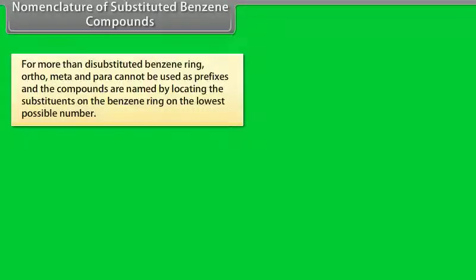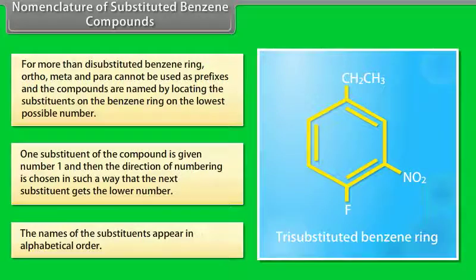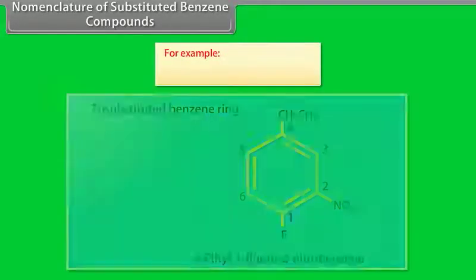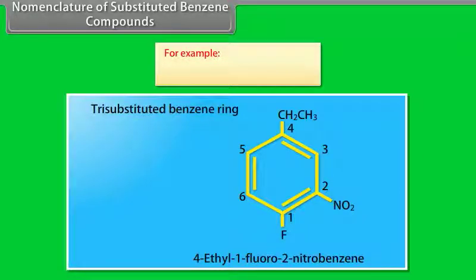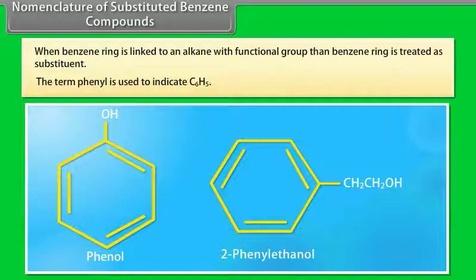For more than disubstituted benzene rings, ortho, meta, and para cannot be used; compounds are named by locating substituents with the lowest possible numbers. One substituent is given number 1, and the direction of numbering is chosen so the next substituent gets the lower number, with substituent names appearing in alphabetical order. For example, assigning number 1 to fluorine gives nitro the position 2 and ethyl the position 4: 4-ethyl-1-fluoro-2-nitrobenzene. When a benzene ring is linked to an alkane with a functional group, the benzene ring is treated as a substituent, and the term phenyl is used to indicate C6H5.